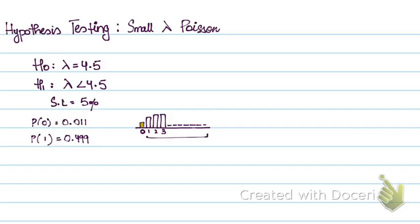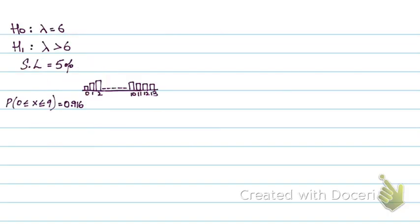But what if the question states that lambda has increased? For that, we'll move to another example. The null hypothesis is lambda equals 6 and the alternative hypothesis is lambda is greater than 6. So that means my rejection region is on the right-hand side, not on the left-hand side.